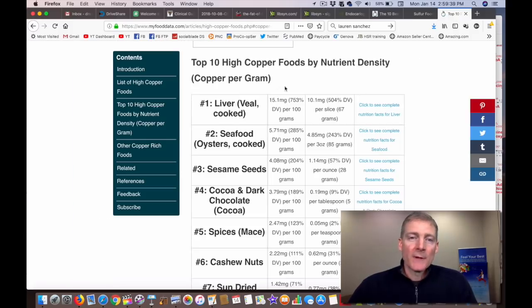I had mentioned copper. The top ten high copper foods by nutrient density. Number one, liver. Number two, seafood. So you see a pattern here. To get the copper and the sulfur and the iron and the carnitine, it's meat, it's animal products. That's just life. That's the food chain. That's how things are.